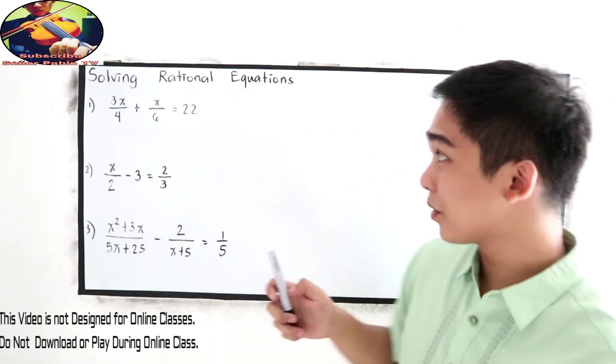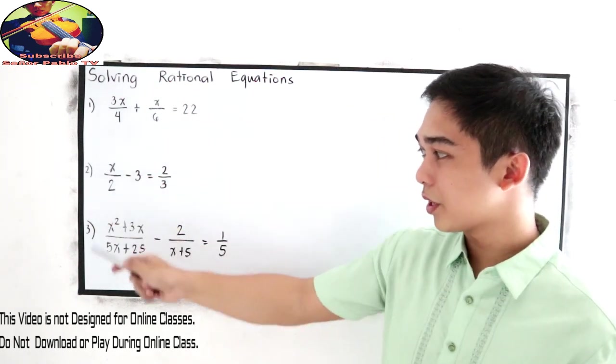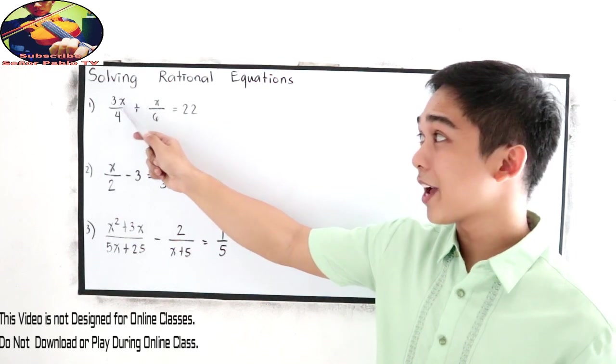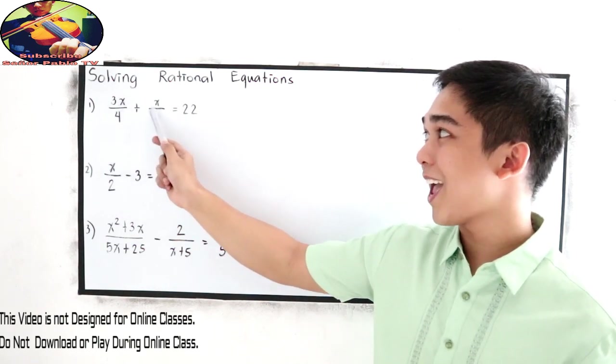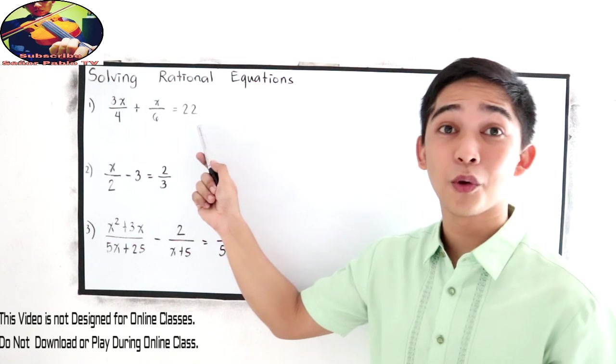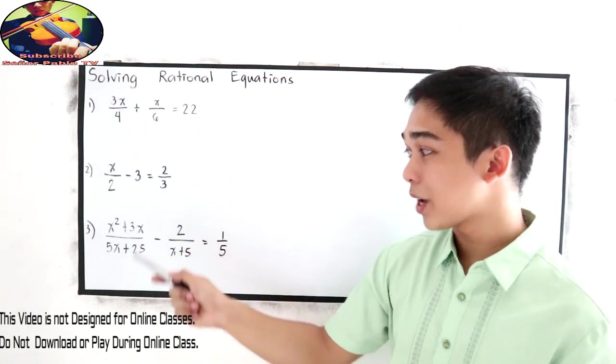In this video we are about to solve number 1, 2, and 3. For number 1, 3x over 4 plus x over 6 is equal to 22. For number 2 and number 3.